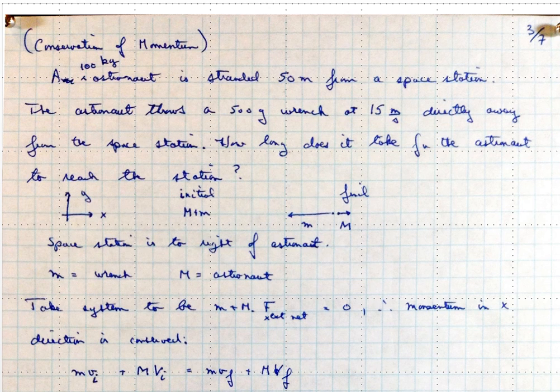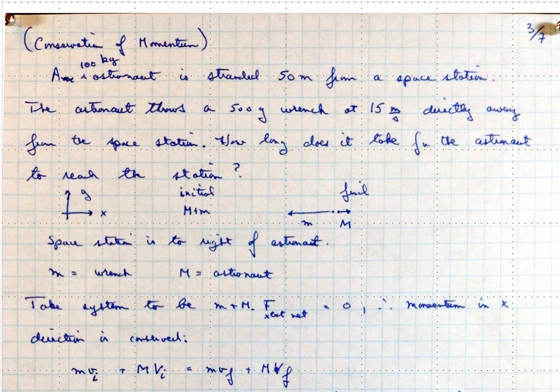Okay, so let's do an example here of conservation of momentum, another example. Let's imagine that we had a 100-kilogram astronaut in outer space that was stranded 50 meters from a space station. So to get back to the space station, the astronaut throws a 500-gram wrench at 15 meters per second directly away from the space station. The question is, how long does it take for the astronaut to reach the space station?